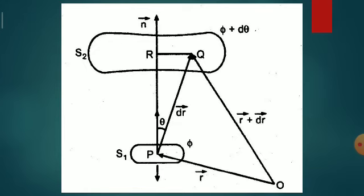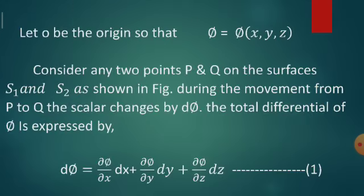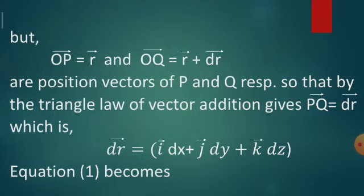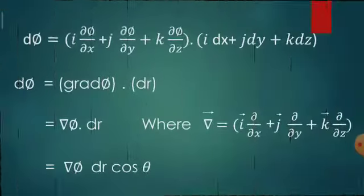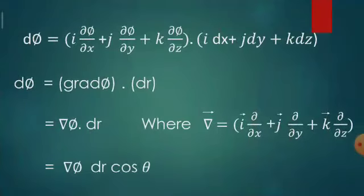Therefore, the equation can be written as d phi equals i curly phi by curly x plus j curly phi by curly y plus k curly phi by curly z dot dr. The first bracket is gradient phi, the second bracket is dr. Both are vector quantities, therefore it equals magnitude of del phi, magnitude of dr, and cosine of angle between them.